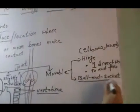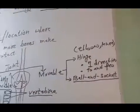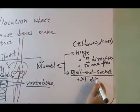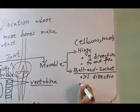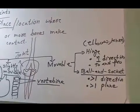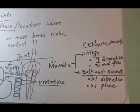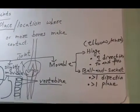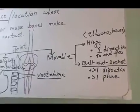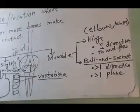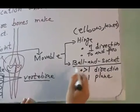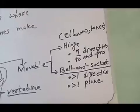Now we will talk about ball and socket joints. Ball and socket joints allow movement in more than one plane, in more than one direction. They allow a spinning-like movement — you can move the part of the body where a ball and socket joint is present in all directions. Examples are the shoulder joint and the hip joint. At the shoulder joint you can move your shoulder in all directions, and at the hip joint you can move your leg in all directions.